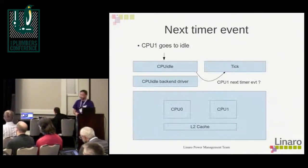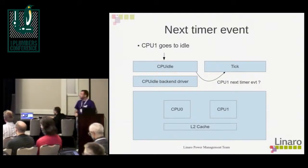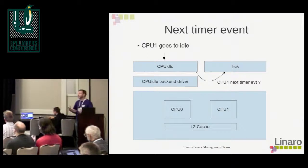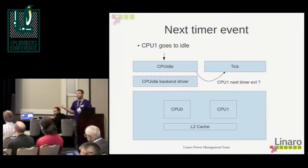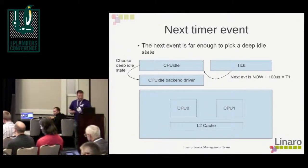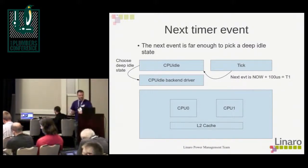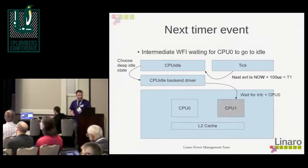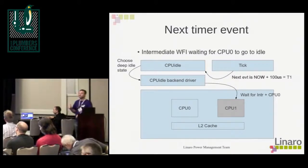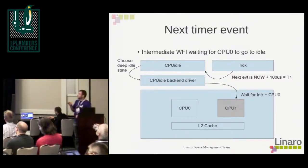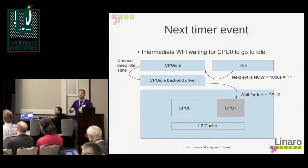Let's look at a small diagram. We have the cpuidle framework, the tick system, and the cpuidle back-end driver taking care of synchronizing CPUs to enter the deep idle state. CPU one goes to idle; the cpuidle framework looks at the next timer event. The tick system says the next timer is at T1, so cpuidle uses this to choose a deep idle state. But the back-end driver won't go to this deep idle state yet — it puts the CPU in WFI and waits for the other CPU to enter the same idle state in order to pull down the entire cluster.